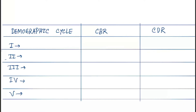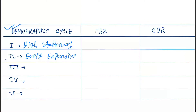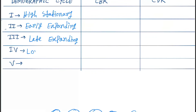There are different phases in the demographic cycle. Phase one is also called the high stationary phase, phase two is the early expanding phase, phase three is the late expanding phase, phase four is low stationary, and phase five is the declining phase.